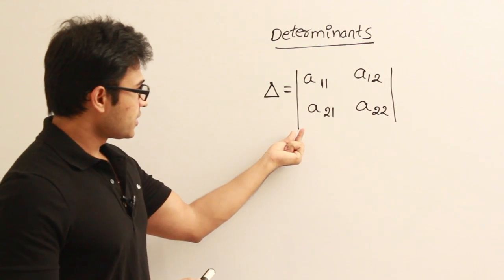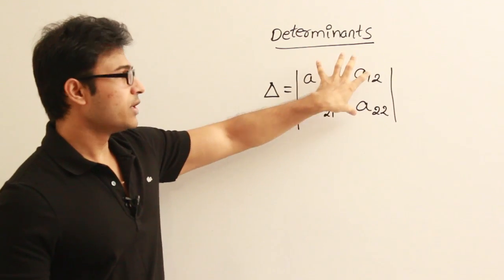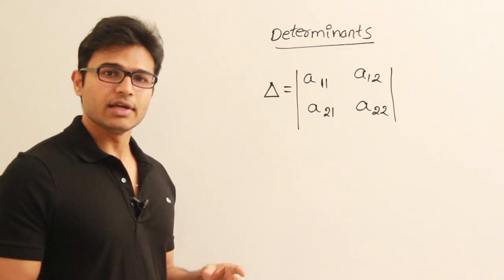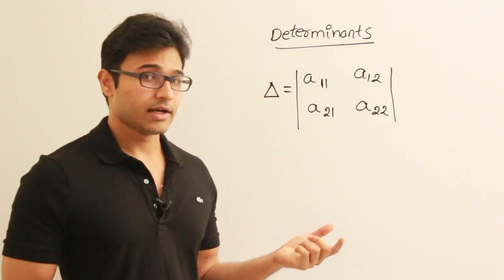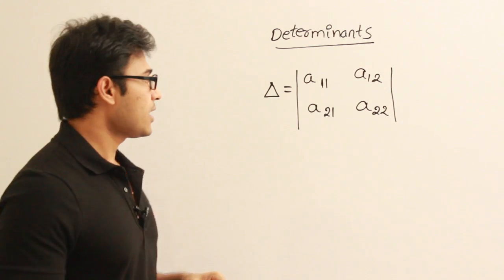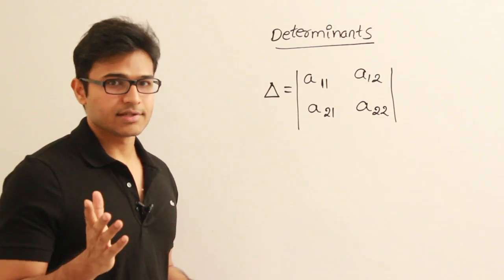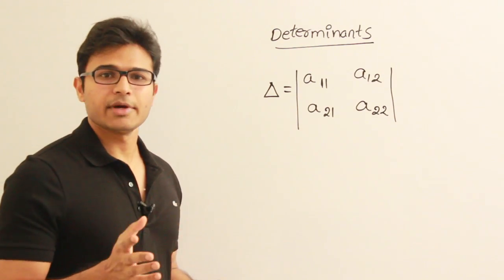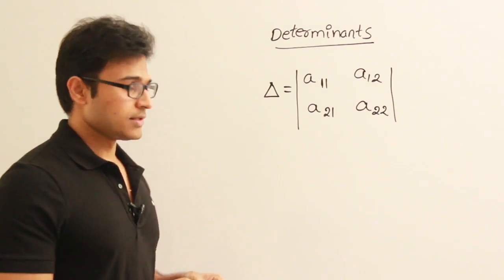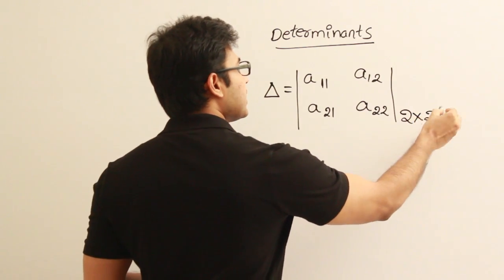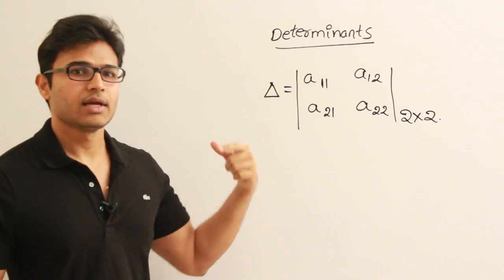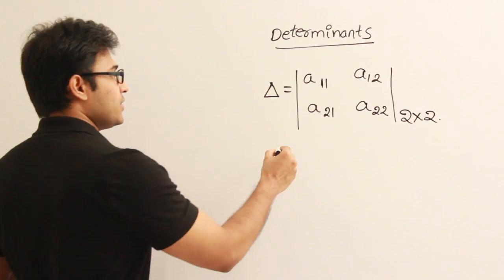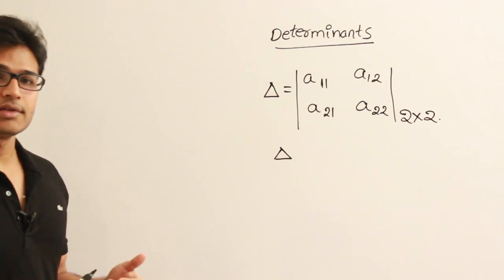Determinants are represented using vertical lines, and we use the symbol delta to represent them. Different textbooks have different conventions, but in this lecture series I will use delta to represent a determinant. Unlike matrices, which can be of any size, determinants must always be square — either 2×2, 3×3, or in general n×n. A 2×2 determinant is called a determinant of order 2, and a 3×3 is called a determinant of order 3.